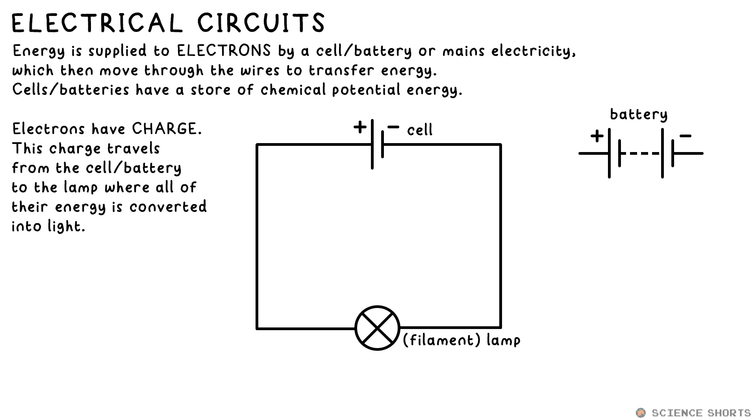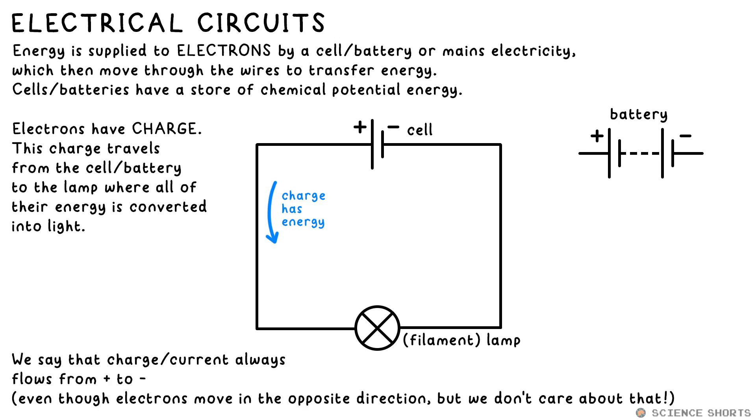The movement of this charge is called a current and we say this current goes from the positive terminal of the battery to the negative. You might realize that seems the wrong way round but don't think about it too much, it's not important for GCSE. Current goes from positive to negative.